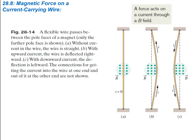In the second figure, with an upward current, the wire is going to be deflected to the right. The dots mean the magnetic field is coming up through the page. A positive charge going from the bottom to the top, along with the field, gives a force to the right, pushing the wire to the right. In the last picture, with a downward current, the deflection is going to be leftward. You can do the right-hand rule to figure that out.